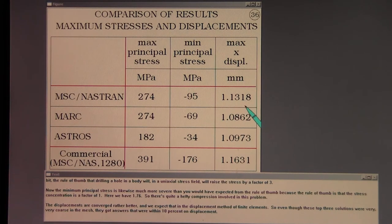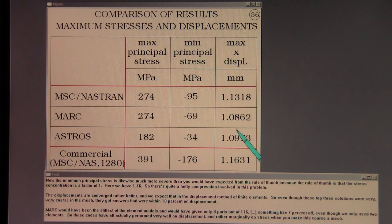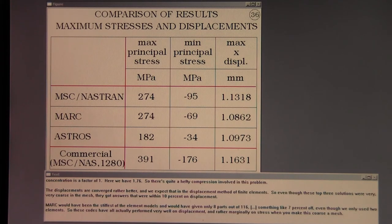The displacements are converged rather better and we expect that in the displacement method of finite elements. So even though these top three solutions were very, very coarse in the mesh, they got answers that were within 10% on displacement. MARC would have been the stiffest of the element models and would have given only 8 parts out of 116, something like 7% off. Even though we only used two elements. So these codes all actually performed very well on displacement and rather marginally on stress when you make this coarse a mesh.